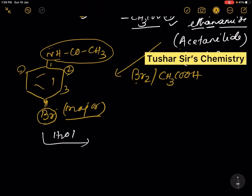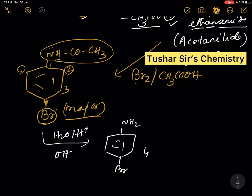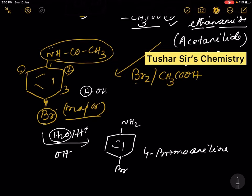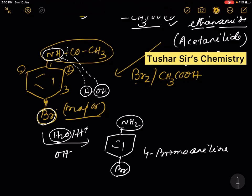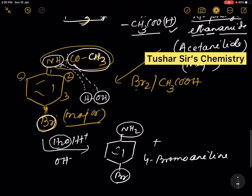This compound on hydrolysis in the presence of acid or base gives 4-bromoaniline. Hydrolysis means we add water: one H is added to the NH and the OH is added to the CO group, so that bond breaks. This part becomes NH2, bromine remains as it is, and the CH3CO group is removed as acetic acid.